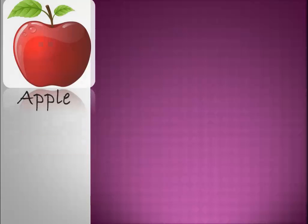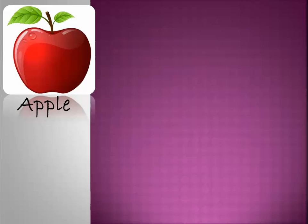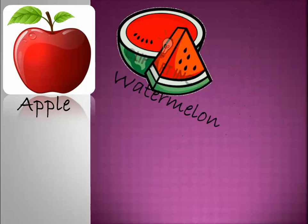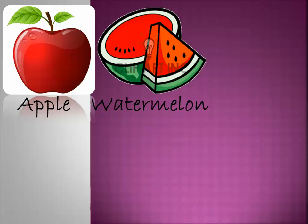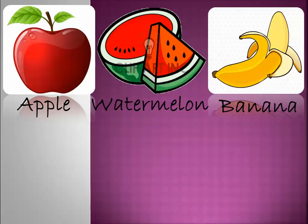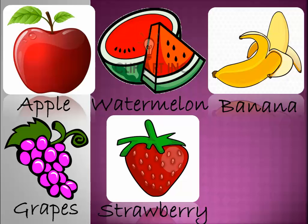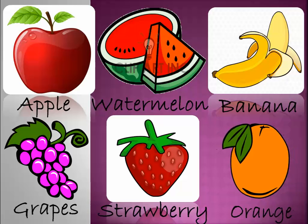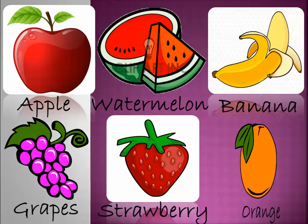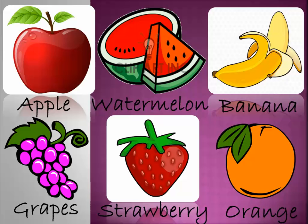Now we're going to review some pictures of the fruits. An apple — apple is a fruit. Watermelon is a fruit. Banana is a fruit. Grapes. Strawberry. And orange. So we have apple, watermelon, banana, grapes, strawberry, and orange — all these are fruits.